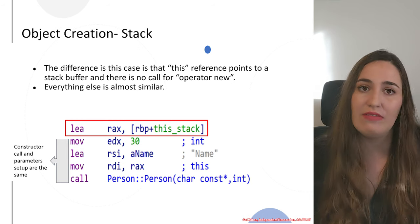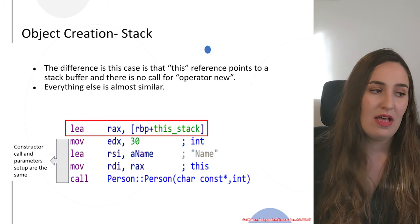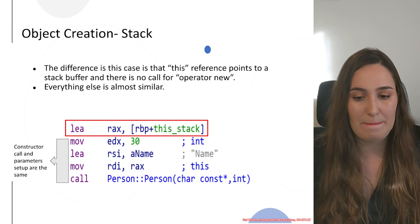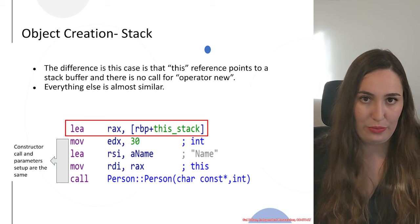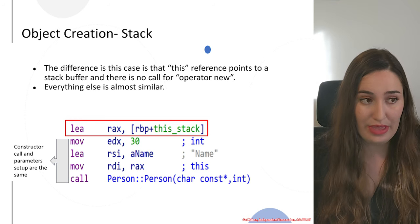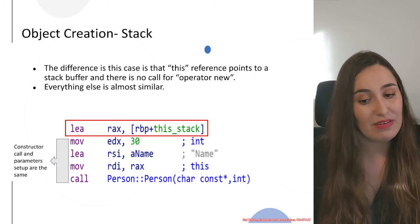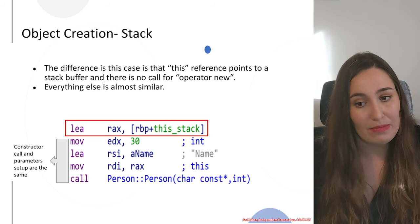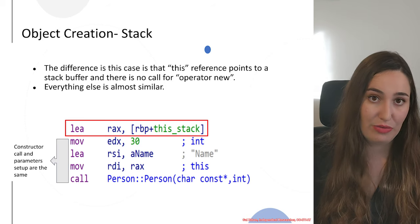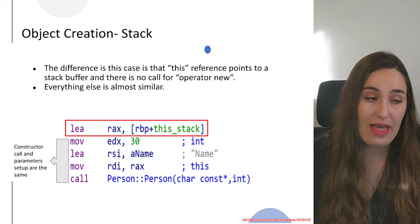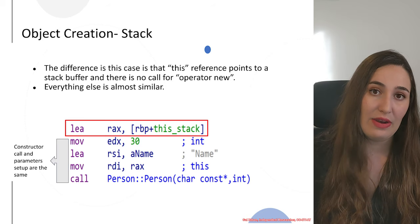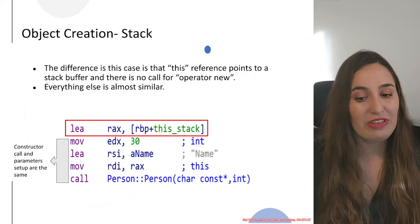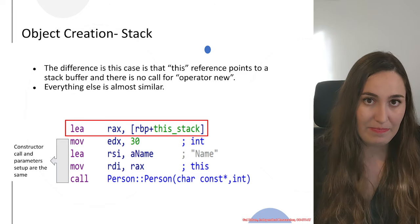The assembly will also behave a little differently when you encounter those smart pointer types. But for now, we will discuss the basic types of creating an object using 'new' to allocate it on the heap manually, or creating an object on the stack.